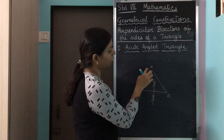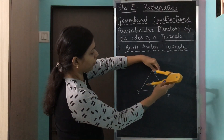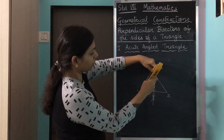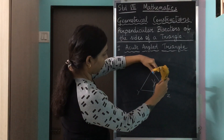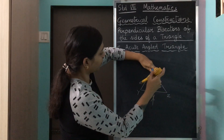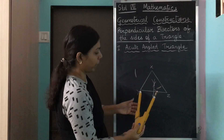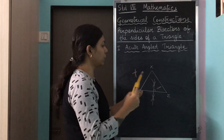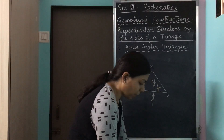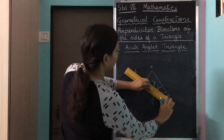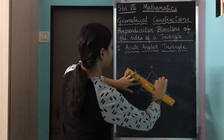Now I am going to do the same thing for side XY. I start by keeping the pointed part on point X and draw my arcs. One arc here and one arc here. Then I keep the pointed part on point Y and draw the two arcs. I have got my two X marks, and now I connect both these points together by adjusting my ruler and drawing the second perpendicular bisector.